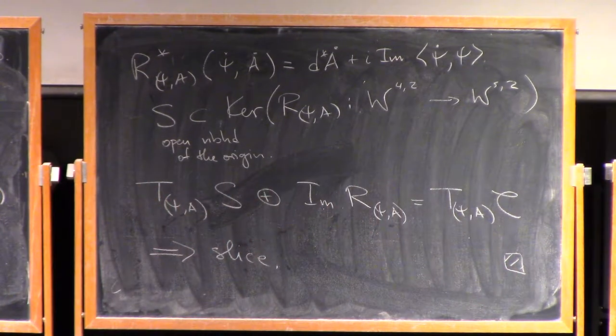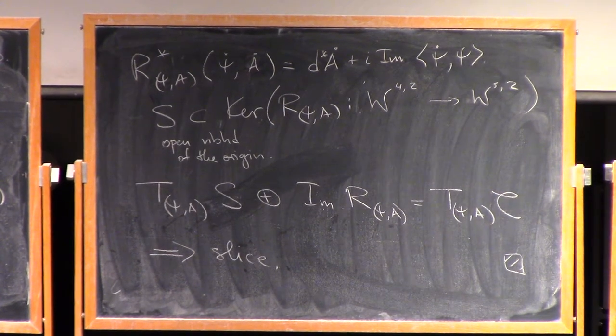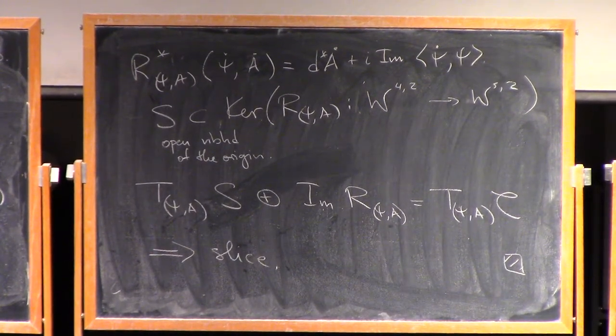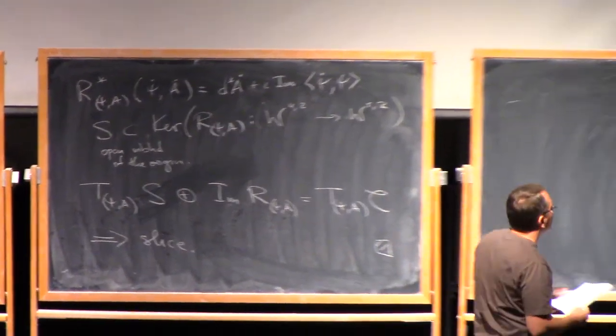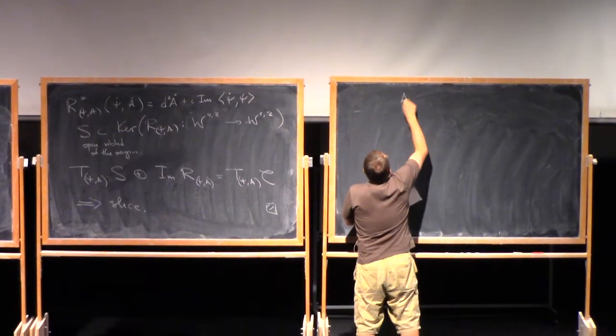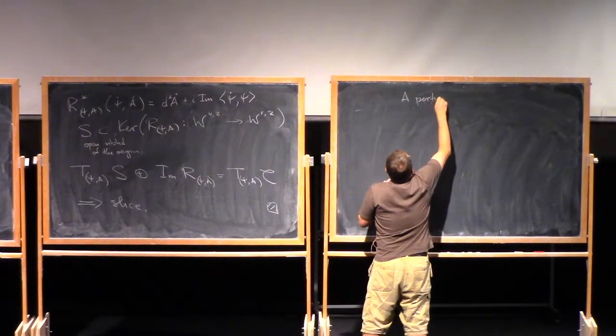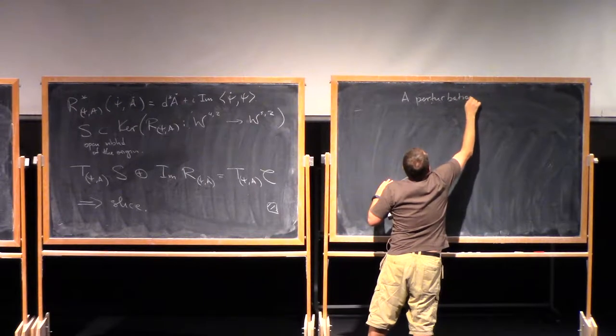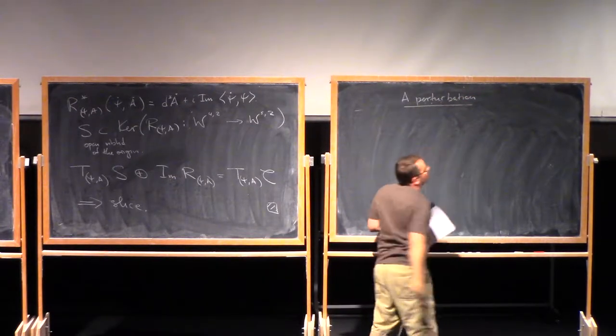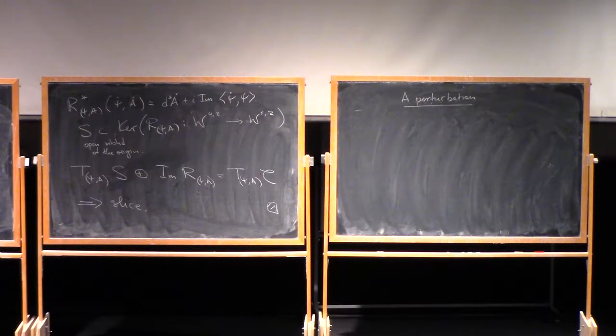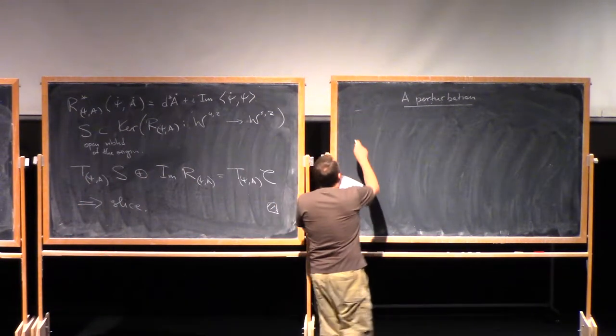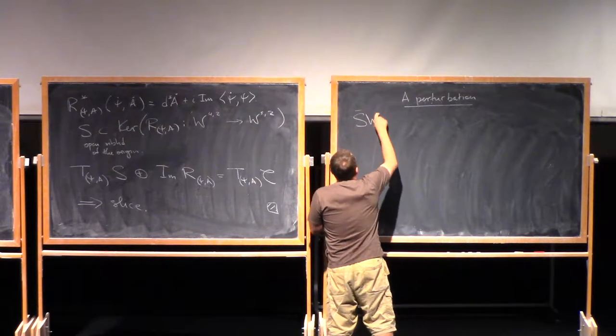So this is good news. Now we have slices through each point, at least through irreducible points. Now we need also a perturbation. In general, if we just take the preimage of some fixed point, there is no reason to expect that the moduli space will be smooth. So we need some family of maps.